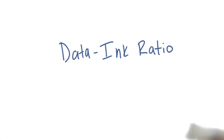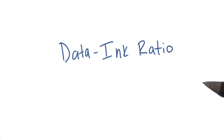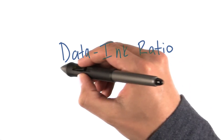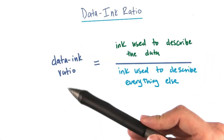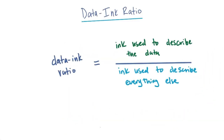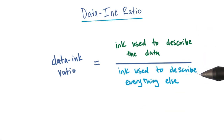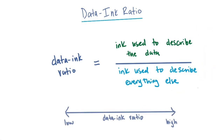In the previous example, we saw how we can make visualizations more clear by removing extraneous elements. We can conceptualize this relationship using something called the data-to-ink ratio. The data-to-ink ratio was defined in 1983 by Edward Tufte and describes the ratio of ink used to describe the data to the ink used to describe everything else.